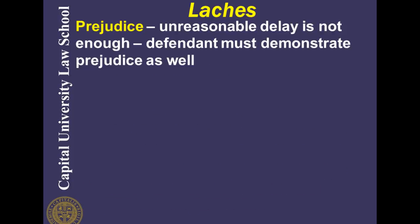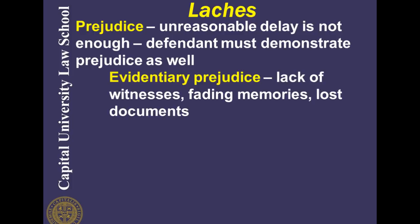The second part of this two-part test is prejudice. Unreasonable delay is not enough; the defendant must demonstrate prejudice as well. Courts will often talk about two different types of prejudice. The first is evidentiary prejudice: as a result of the delay, there are fewer witnesses now available — either they have disappeared, died, or their memories have faded. Documents have been destroyed, computer files have been damaged. Because of the delay, there is a lack of evidence that the defendant can rely on to defend against the claim.